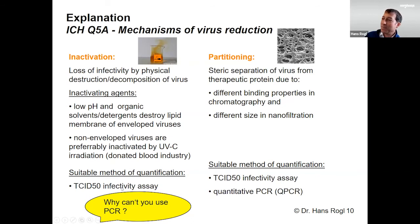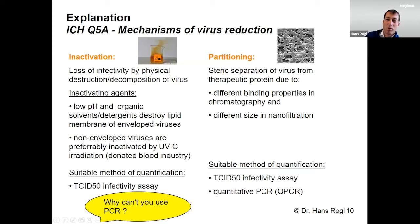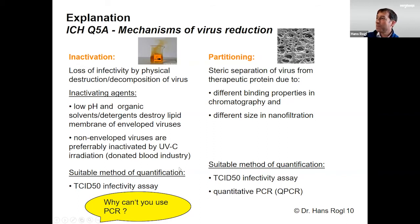How do you quantify such an inactivation? You have to use an infectivity assay. Why couldn't you use a PCR assay? Because with these inactivation methods, you just destroy the envelope of the virus but you don't destroy the nucleic acid — the DNA or RNA — so a nucleic acid detection method like PCR wouldn't work. You would still detect it, but it's not active anymore.